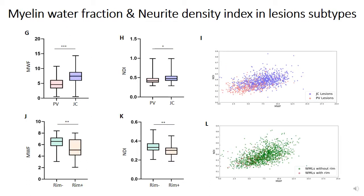Next, we wanted to study the myelin-axon interplay in different lesions. For this purpose, we compared periventricular versus juxtacortical and rim-positive versus rim-negative lesions. Our results showed that myelin water fraction and NDI are higher in juxtacortical than in periventricular lesions, which could be due to more numerous and more efficacious oligodendrocyte precursor cells in the juxtacortical area. Also, we have shown that rim-positive lesions contain less myelin water fraction and NDI compared to rim-negative lesions, confirming previous neuroimaging and neuropathological studies showing that rim-positive lesions represent chronic active lesions with extensive damage to myelin and axon.